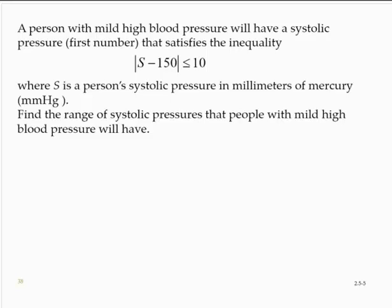A person with mild high blood pressure will have a systolic pressure, which is the first number, that satisfies the inequality absolute value of s minus 150 is less than or equal to 10, where s is the person's systolic pressure in millimeters of mercury. Find the range of systolic pressures that people with mild high blood pressure will have.